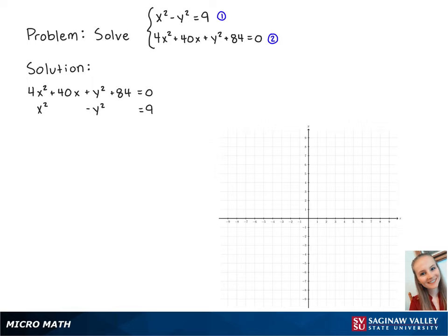For this problem, we're going to solve the following system of equations. We're going to use the process of elimination by adding the two equations, so that we get 5x squared plus 40x plus 84 equals 9.